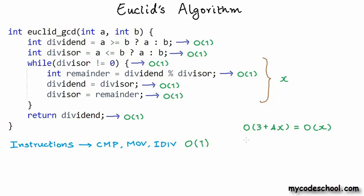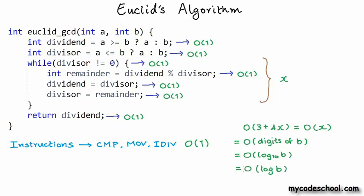So the time complexity of Euclid's algorithm is O(log B), where B is the smaller of the two numbers whose GCD is being derived. To understand how fast log B is compared to the previous algorithm's square root of B: for B = 1000, square root of B is roughly 30 while log B to base 2 is roughly 10 — three times less. For B = 1 million, square root of B goes up to 1000 while log B to base 2 just doubles to roughly 20 — now 50 times lower. As B increases, this difference gets more exaggerated.